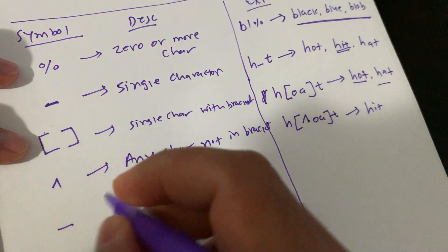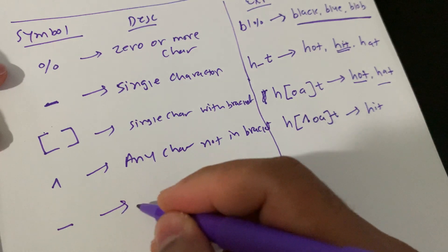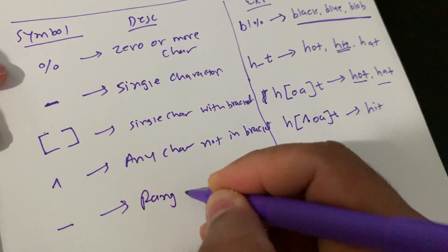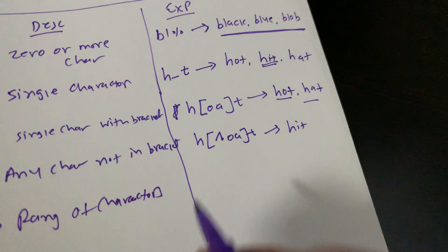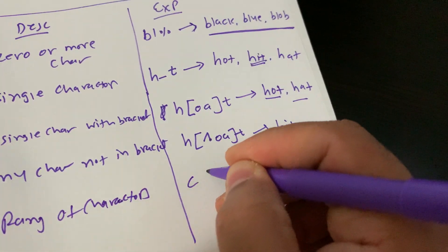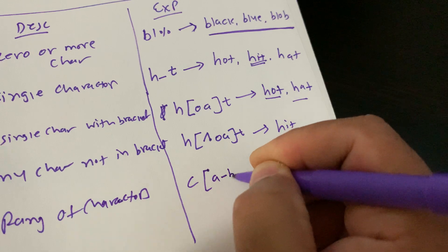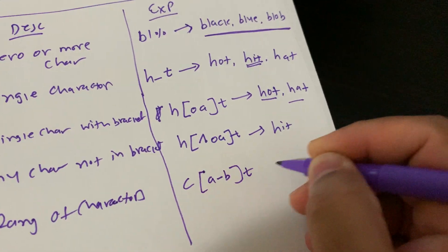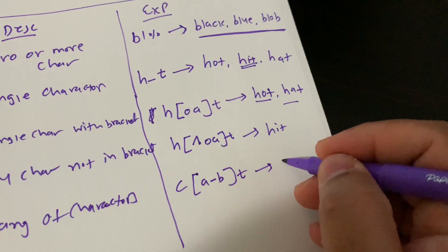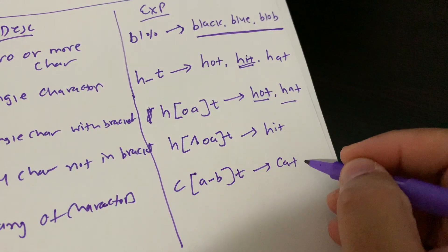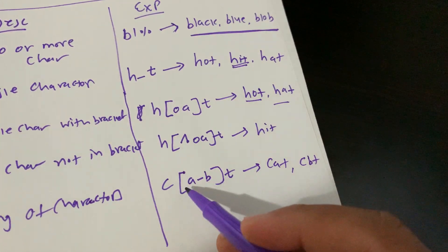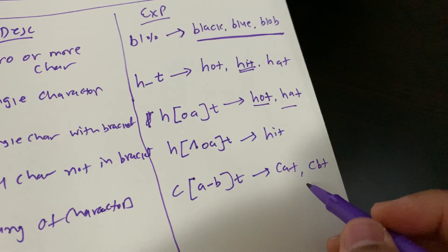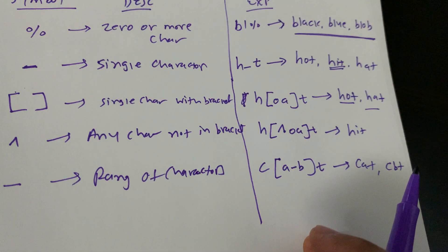The hyphen (-) wildcard represents a range of characters. For example, C[A-B]T — this will return results like 'cat' and 'cbt', matching any character within the specified range between A and B.